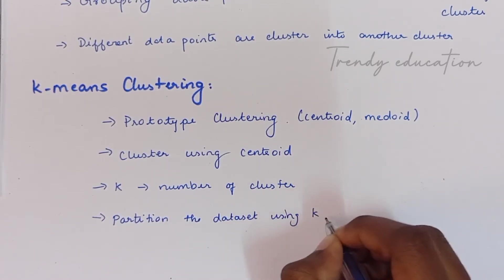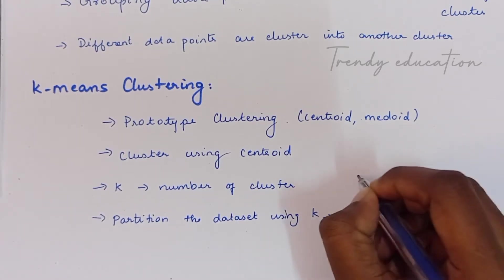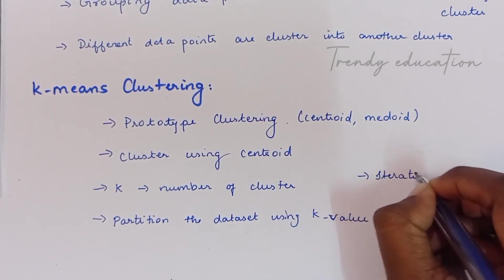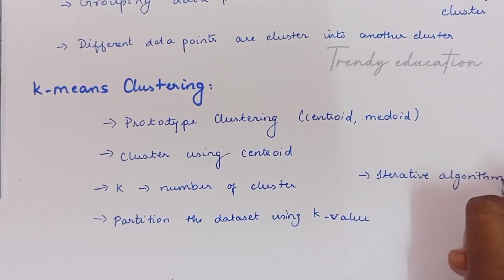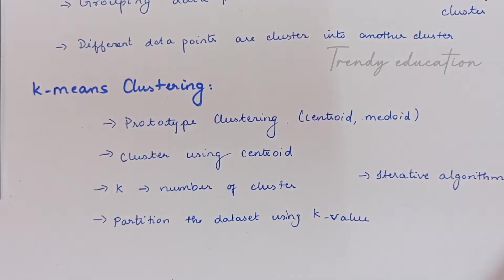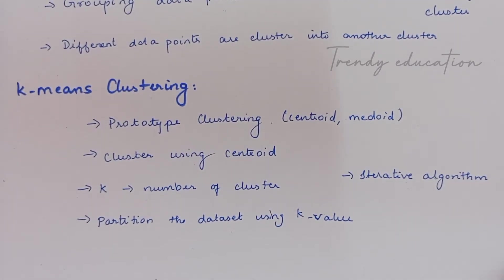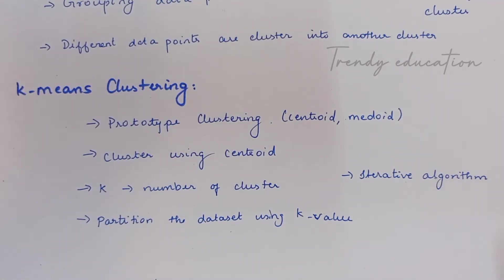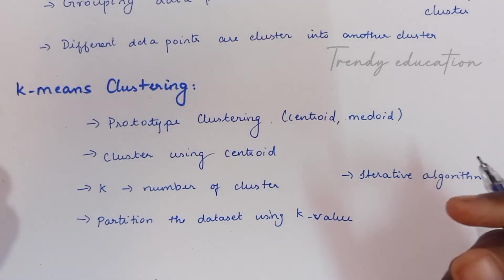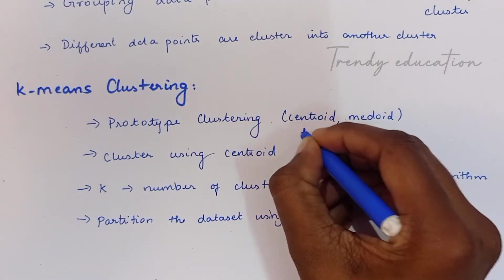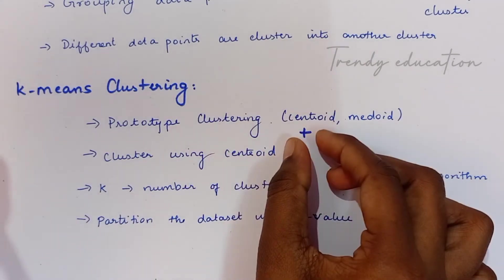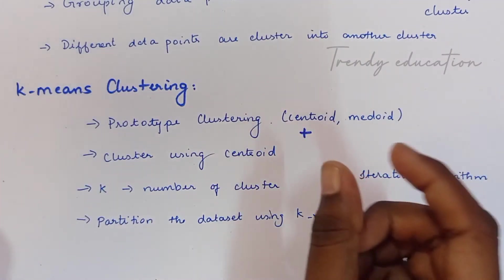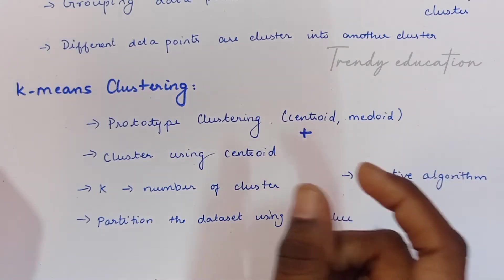K-means is also an iterative algorithm — I'll explain why as we go through how it works. In the k-means algorithm, we assign data points to clusters such that the distance between the centroid and the data points is minimized. The centroid is represented as a plus symbol. When the distance between a centroid and a data point is shortest, that point is clustered into that group.